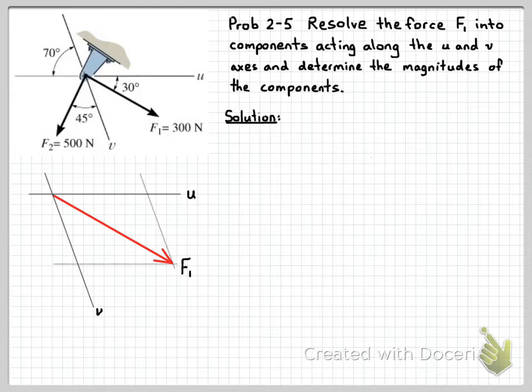So we'll draw lines at the tip of F1 parallel to our axes. Here we've got a line parallel to the axis u at the tip of F1, and then we have another line here parallel to the axis v also at the tip of F1.